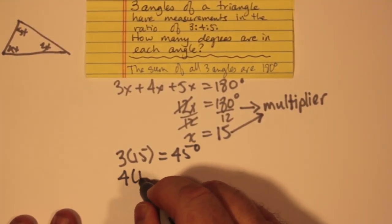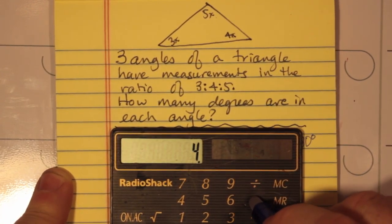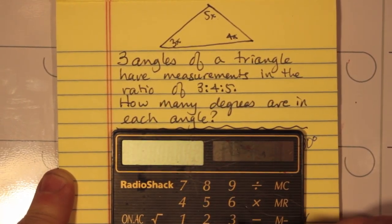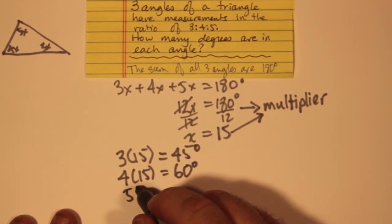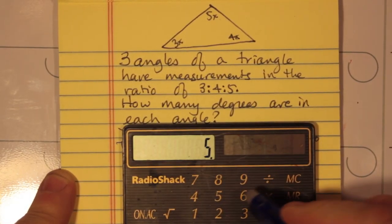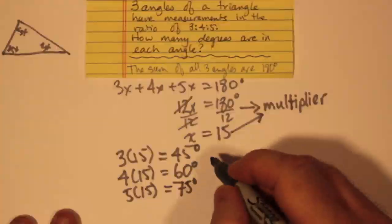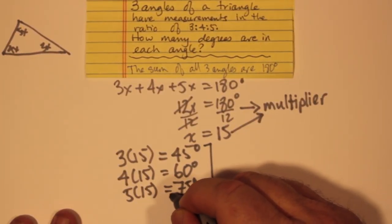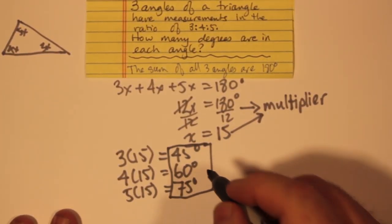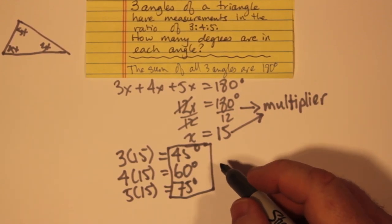4 times 15, if you work that out on your calculator, you will get 60 degrees. And 5 times 15 is 75 degrees. And these are now the 3 angles that we were supposed to find.